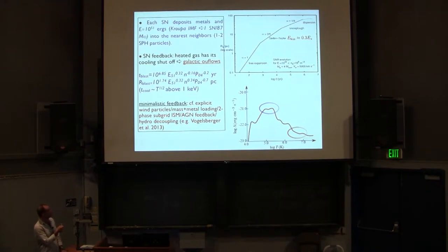This is a minimalistic type of feedback as well. It's interesting to compare that with what other people do. We don't have explicit wind particles. We don't have mass loading. We don't have metal loading put by hand. We don't have two-phase subgrid ISM. We don't have AGN feedback. We don't decouple the hydro. Okay, that's the only thing we do. We shut off cooling and let everything evolve. Of course that means we don't have perhaps not as much physics that we like to have. On the other hand, the number of free parameters that we have is also small compared to what other people do.